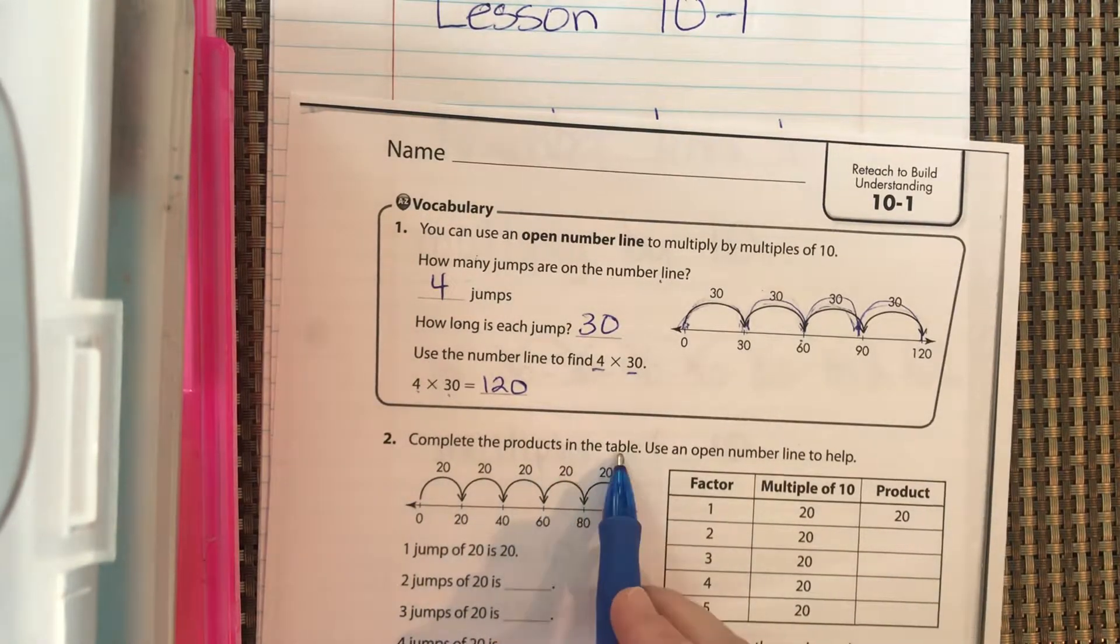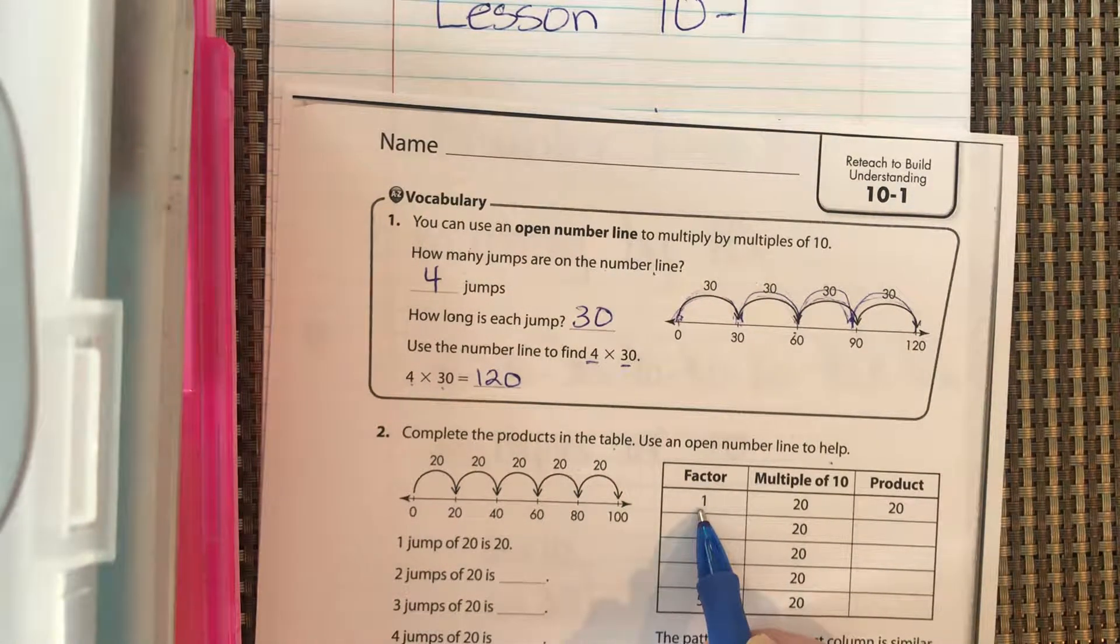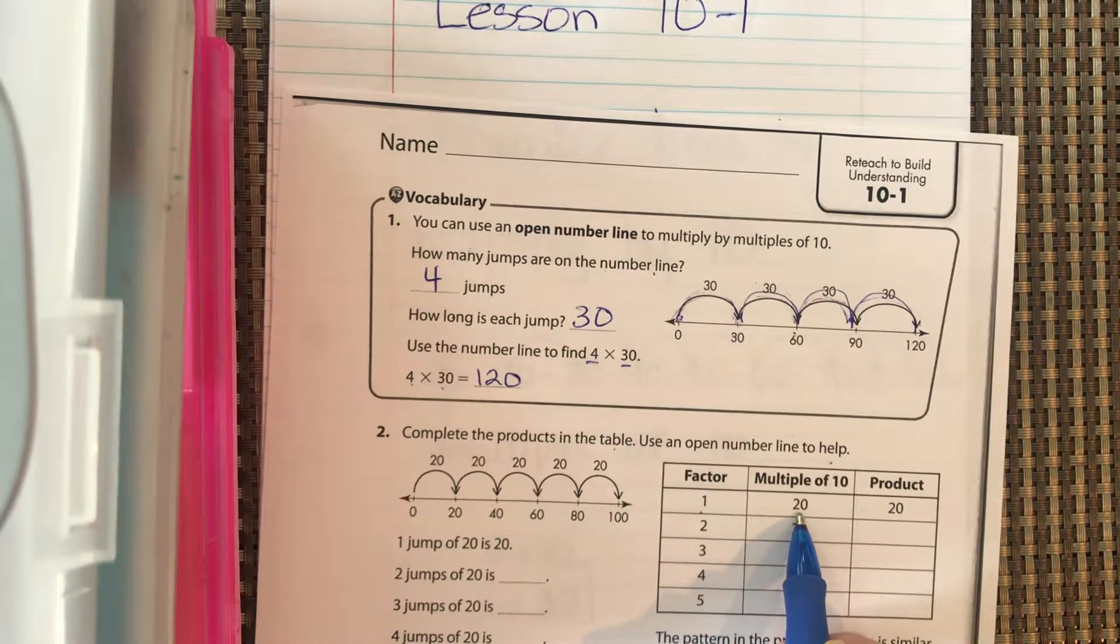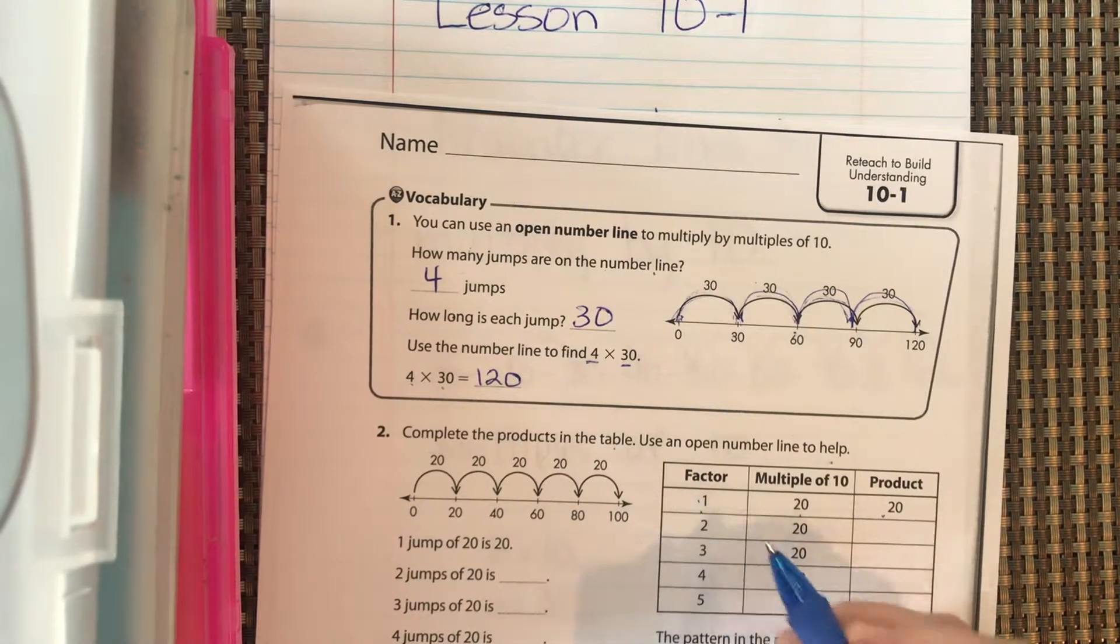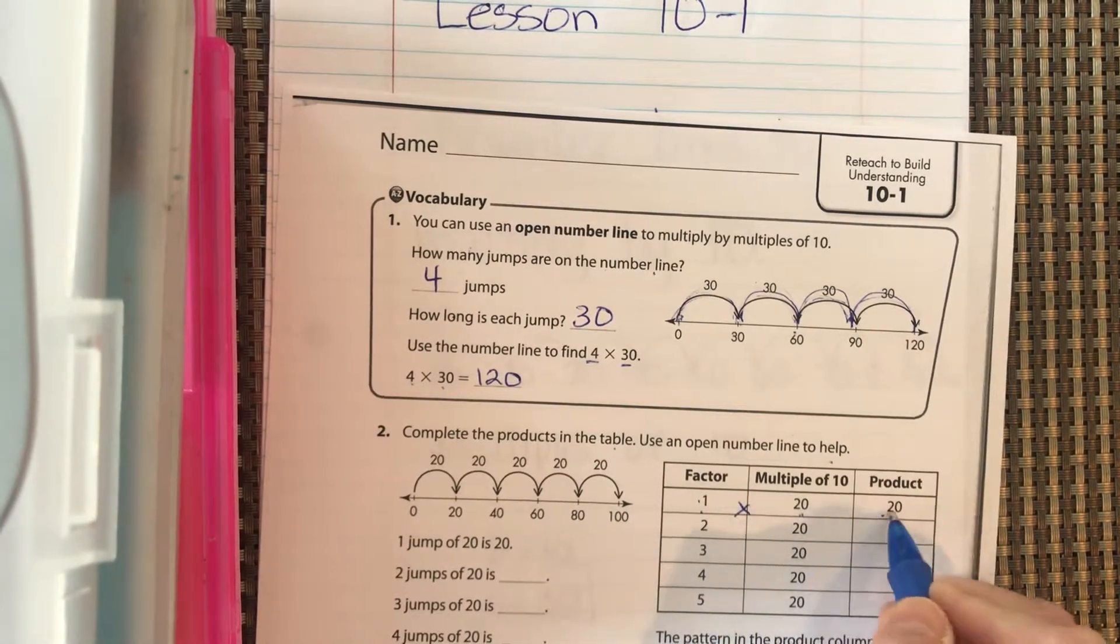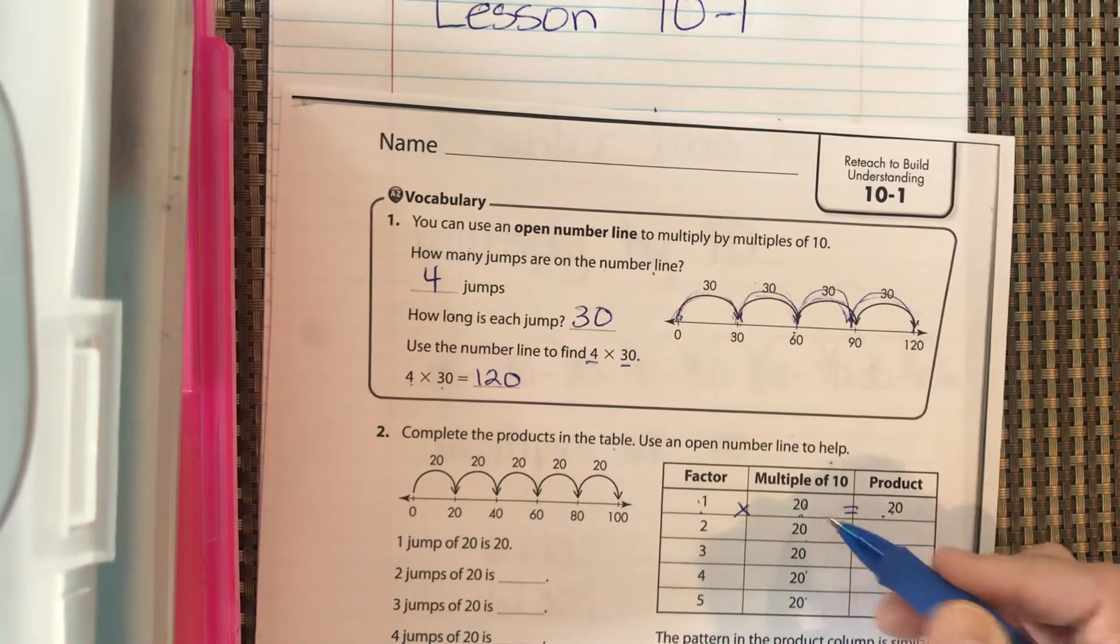Complete the products in the table. Use an open number line to help. One factor times 20 is 20. The factor, remember factor times a factor equals the product. They're calling the second factor a multiple of 10, which it is.